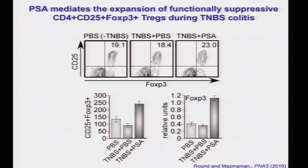Regulatory T cells are marked by transcription factor FOXP3, and we also use CD25 as another marker. Both healthy animals and colitic animals have the same relative proportions of regulatory T cells in the intestine. But if animals are treated with colitic agent and administered PSA orally, you can see a proportional increase in these FOXP3-positive cells — there's also a numerical increase. PSA also increases the transcription of FOXP3, implying cell-intrinsic increased regulatory activity. Each regulatory T cell is more suppressive if it came from a PSA-treated animal.